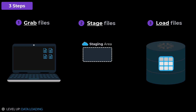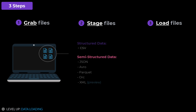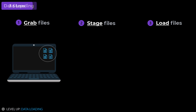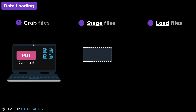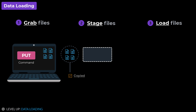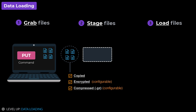Before we can stage our files into Cloud Storage, they must first be in a file format Snowflake recognizes. We then execute the PUT command from SnowSQL to stage our files into Cloud Storage. During this process, our files will be copied, encrypted, and compressed into a .gz extension before being staged.